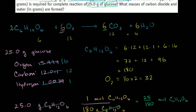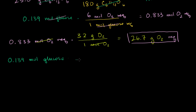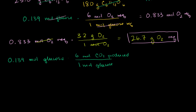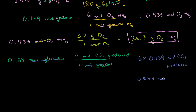From the balanced equation, for every 1 mole of glucose we produce 6 moles of CO2. We put moles of glucose in the denominator to cancel with the 0.139 moles we have. So 0.139 × 6 = 0.833 moles of CO2 produced.